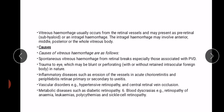Vitreous hemorrhage usually occurs from the retinal vessels and may present as pre-retinal, sub-hyaloid, or intragel hemorrhage. The intragel hemorrhage may involve the anterior, middle, posterior, or the whole vitreous body. Causes of vitreous hemorrhage include spontaneous hemorrhage from retinal breaks, especially those associated with posterior vitreous detachment.